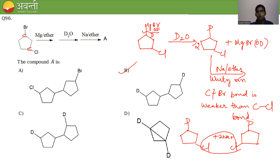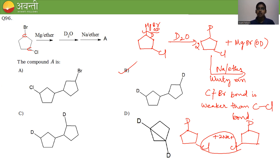Finally, this compound is treated with sodium in ether — this is the Wurtz reaction. Two moles of the compound react with 2 Na, eliminating 2 NaCl and forming a new C-C bond. The desired product is given in option B. I hope this session was useful — thank you all.